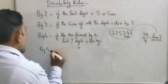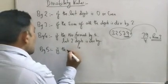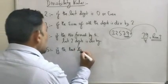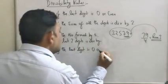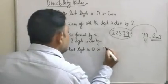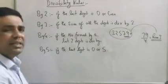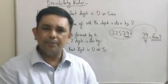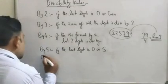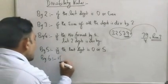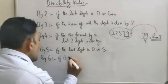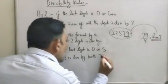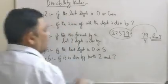A number is divisible by five if the last digit is zero or five. A number is divisible by six if it is divisible by both two and three.